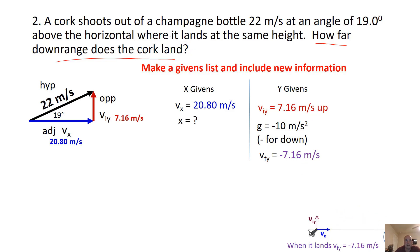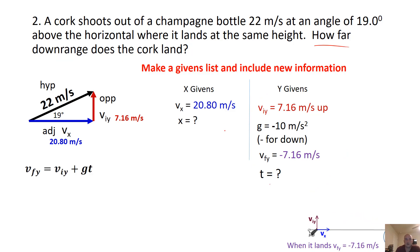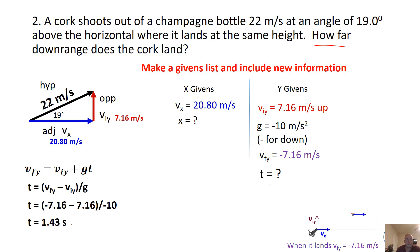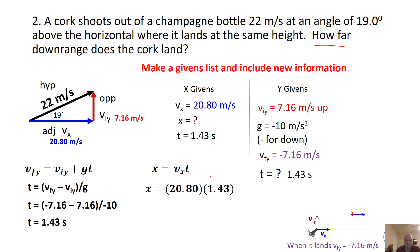Now we're ready to solve the question. How far downrange means we need X, so we solve for T first using VF equals VI plus GT. We rearrange and plug in, and the time is 1.43 seconds. That's also the time it travels forward. Now we go to the X-axis with the only equation we use there: X equals VX times T. We plug in 20.8 and 1.43 and get 29.74 meters. The cork is going to fly out 29.74 meters.